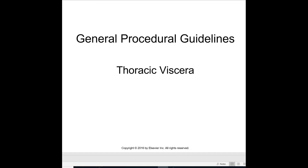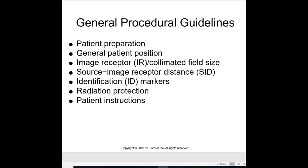General procedural guidelines for the chest x-ray include: patient preparation, general patient position, image receptor, collimated field size, source-to-image receptor distance, identification markers, radiation protection and shielding, and giving proper patient instructions — which means taking a breath, blowing it out, taking another deep breath, and holding it.